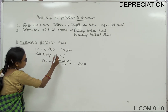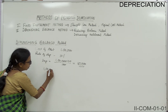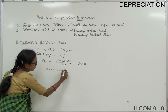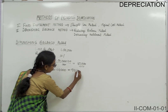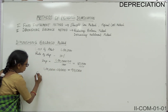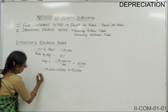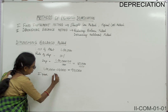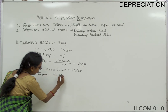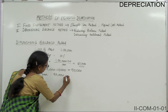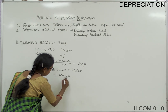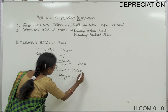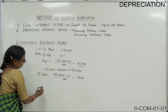First year depreciation is 10,000. From the cost of 1 lakh, deduct depreciation of 10,000. The balance is 90,000, which is the opening balance for the second year. On 90,000 at 10%, depreciation comes to 9,000. So second year depreciation is 9,000.